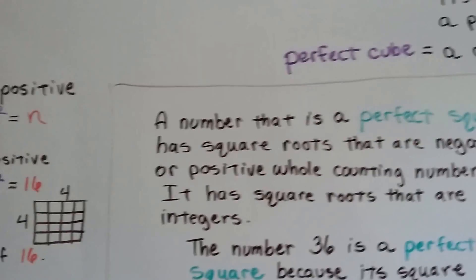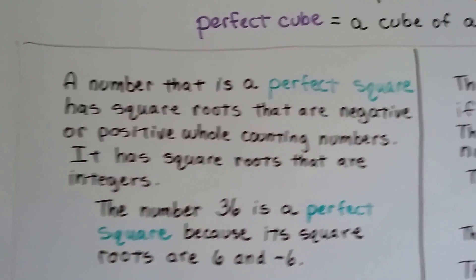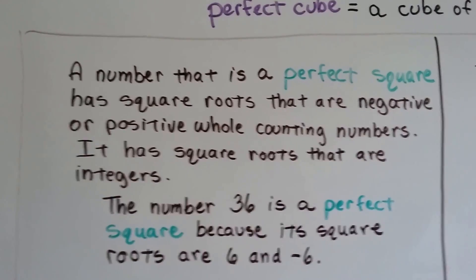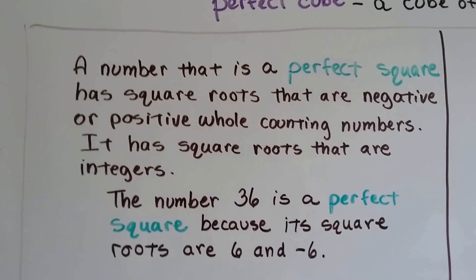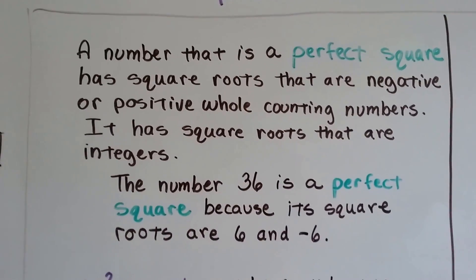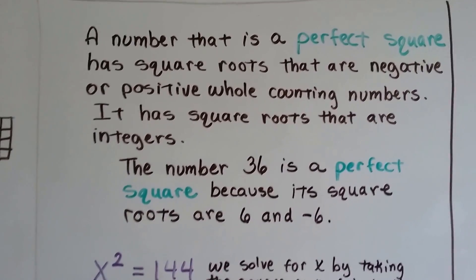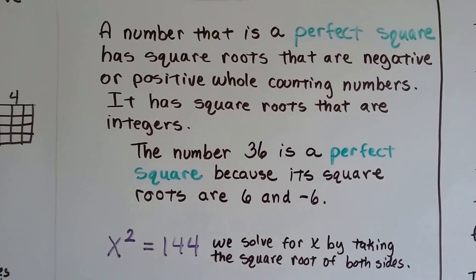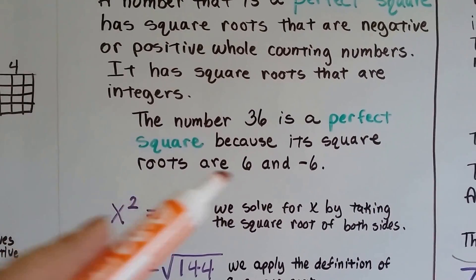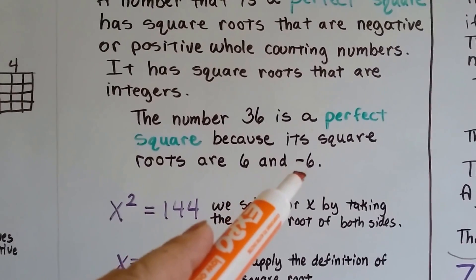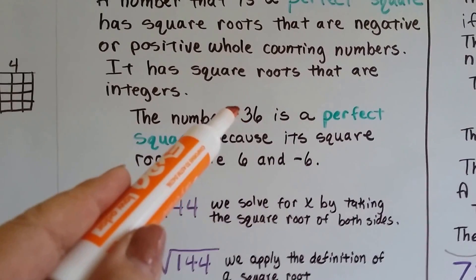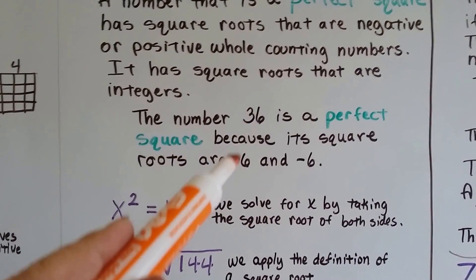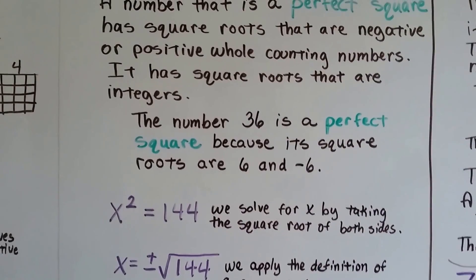A number that is a perfect square has square roots that are negative or positive whole counting numbers — they're square roots that are integers. The number 36 is a perfect square because its square roots are 6 and negative 6. When we multiply negative 6 times negative 6, we're going to get a positive 36. And multiplying positive 6 by positive 6, we also get a positive 36.